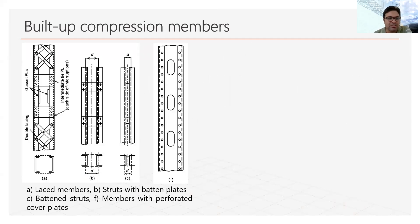In this diagram, you can see the first type is laced members. In the section view, there are two channel sections, and in the longitudinal section you can see the crossing members used to connect them — these are called lacing. In between them there are some horizontal plates, which are called battens. Generally the lacing system is used in combination with battens for efficient use.